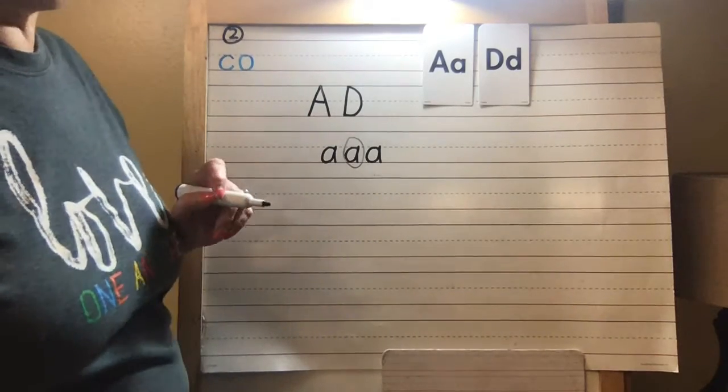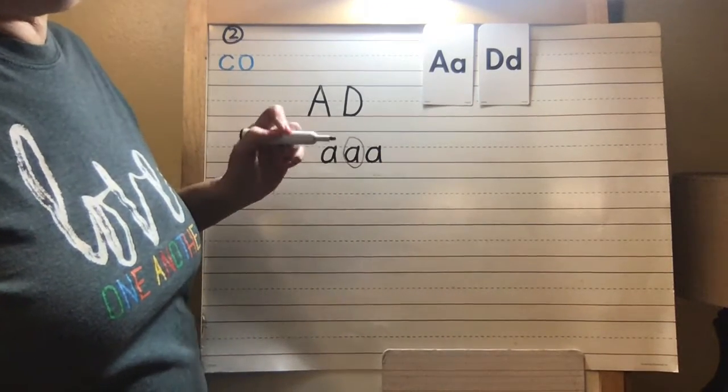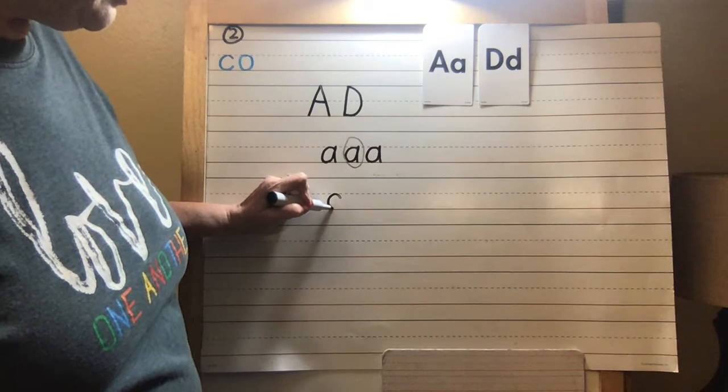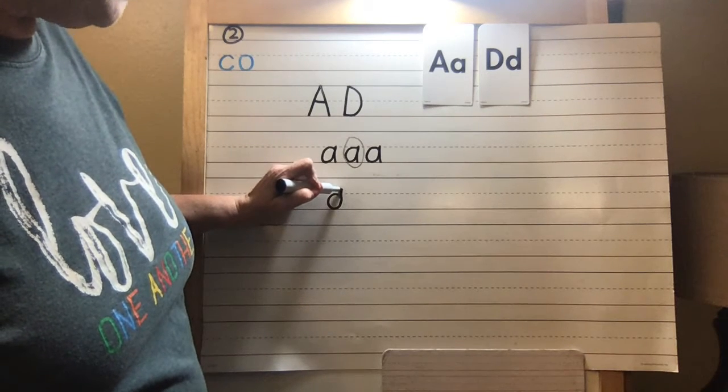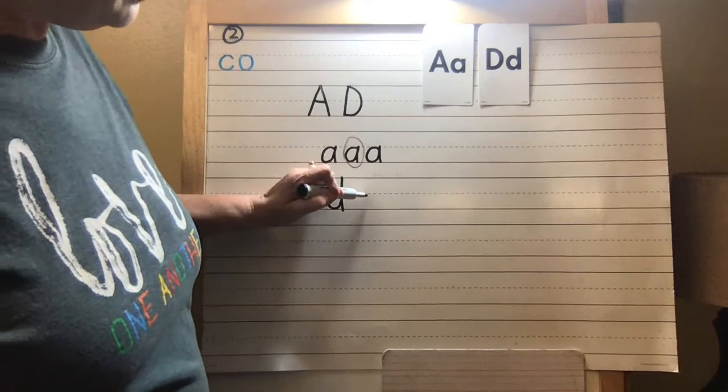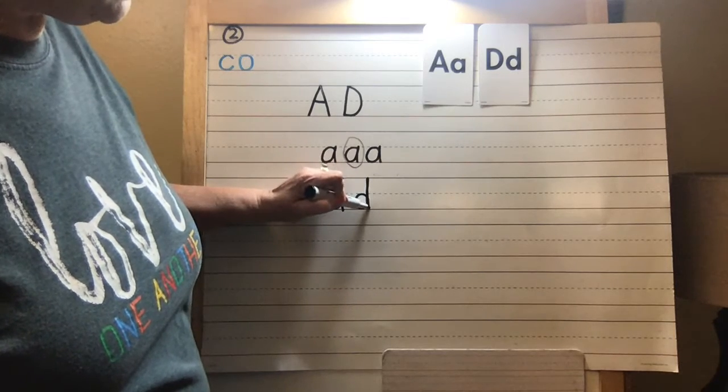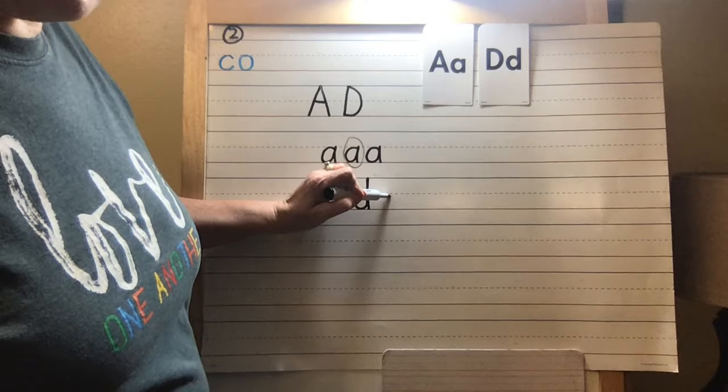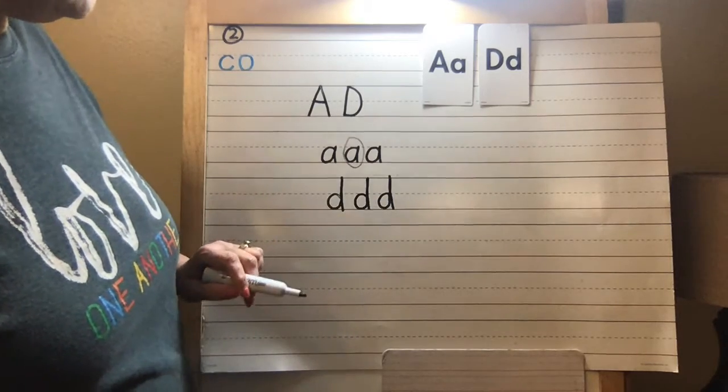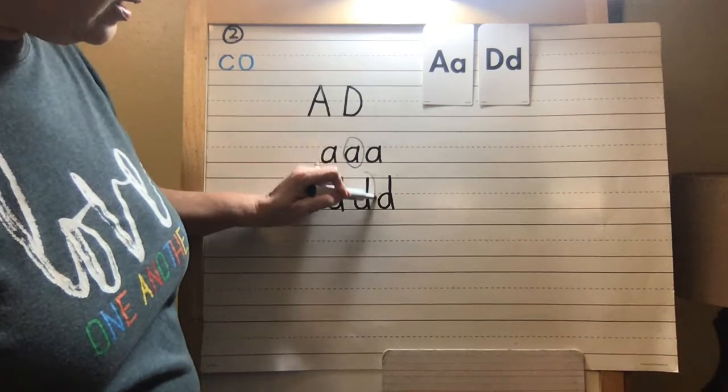Now we're going to do the lowercase d. So with the lowercase d, you're doing exactly the same thing, except you're going up higher. So you're going to start with the magic C, up like a helicopter, but keep going. Then come back down, bump the line. Magic C, up like a helicopter, back down, and bump. Magic C, up like a helicopter, back down, bump. Notice that I went a little too far on that one. That's okay. But I think this is probably my best one.